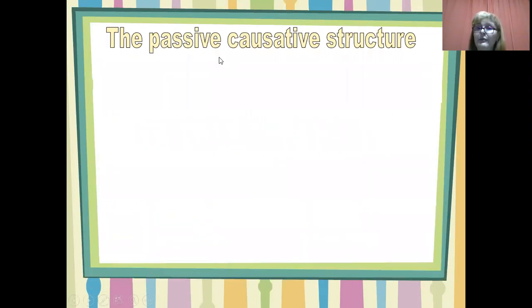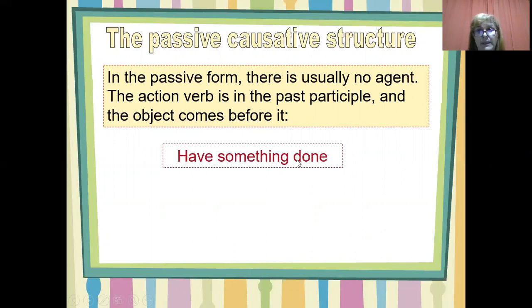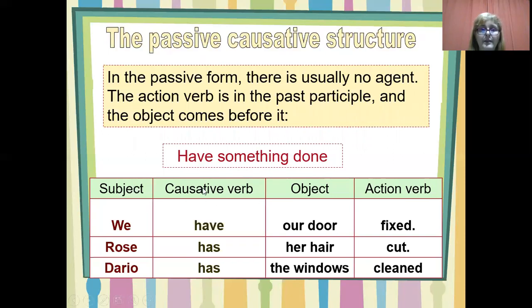The passive causative structure. In the passive form, there is usually no agent. The action verb is in the past participle and the object comes before it. Have something done. So you need to have the object and the past participle — subject, causative verb, object, and the action verb in the past participle.